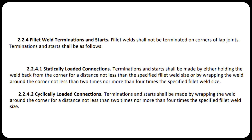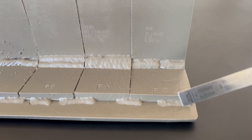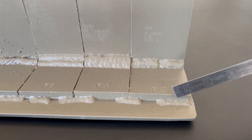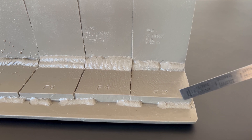2.2.4 states that fillet welds shall not be terminated on the corner of lap joints. Terminations and starts shall be as follows. This simple sentence outlines that fillet welds can't terminate on the corner of lap joints. If you see a weld terminate on the corner of lap joints during your exam, it's rejected — simple and plain.